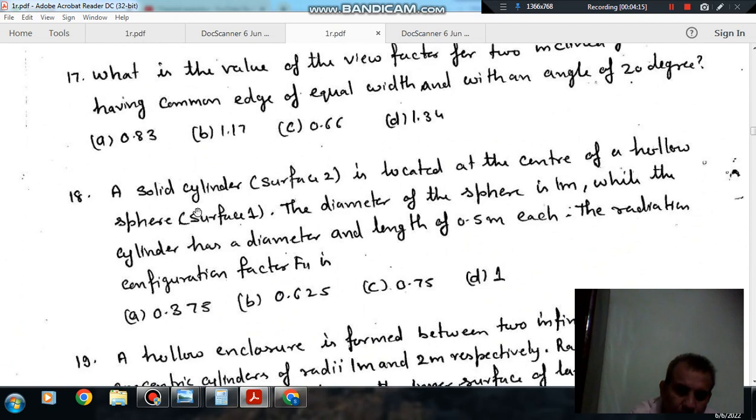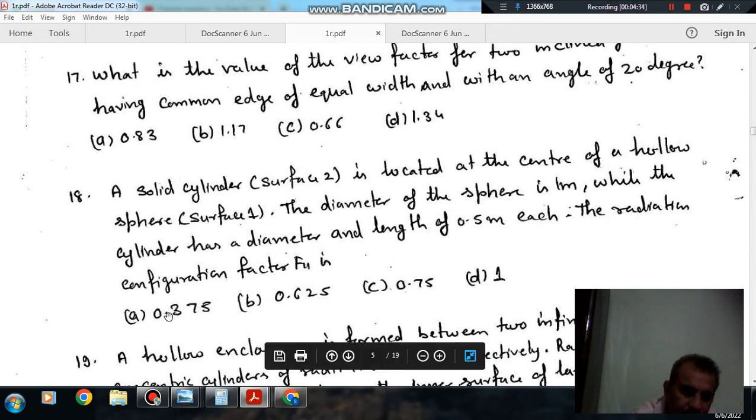Question 18: A solid cylinder surface 2 is located at the center of a hollow sphere surface 1. The diameter of the sphere is 1 meter, while the cylinder has diameter and length of 0.5 meters each. The radiation configuration factor F11 is: option A 0.375, option B 0.625, option C 0.75, and option D is 1.